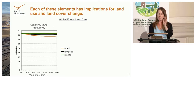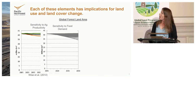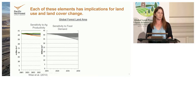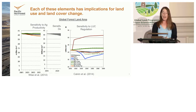In each of these figures I'm varying just one factor at a time, then I'll bring it all together. For food demand — specifically varying the amount of meat in the diet — the scenarios with the lowest forest cover are those with the most meat-intensive diets. The more meat you eat, the more land you need to convert to produce it, so you end up with less forest.